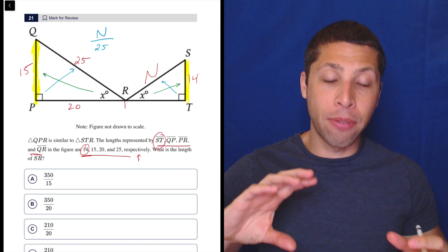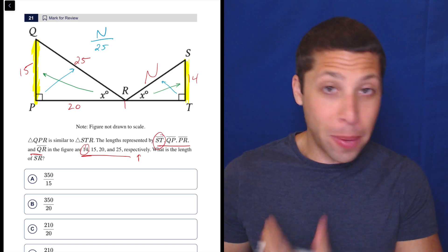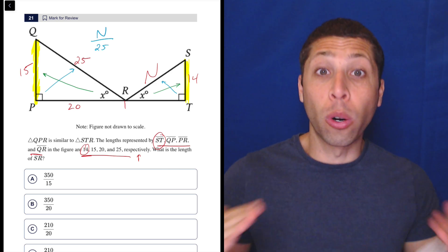So what I'm doing is I have the hypotenuse of the small triangle and the hypotenuse of the big triangle. They're both hypotenuses. They correspond.